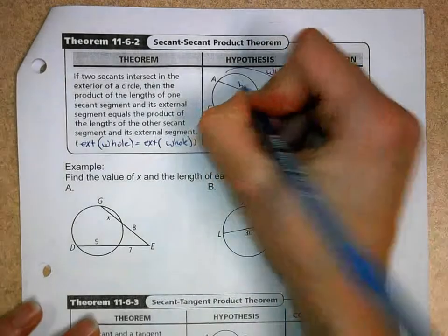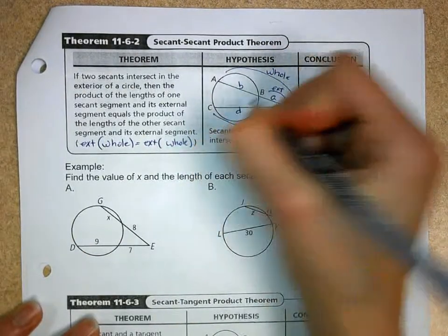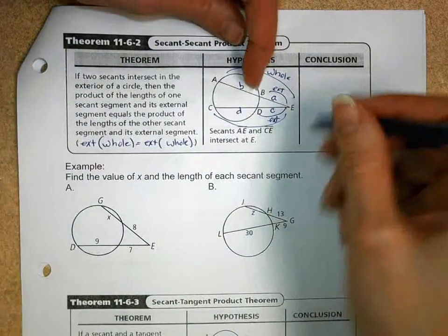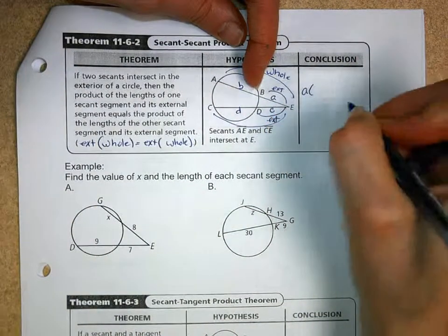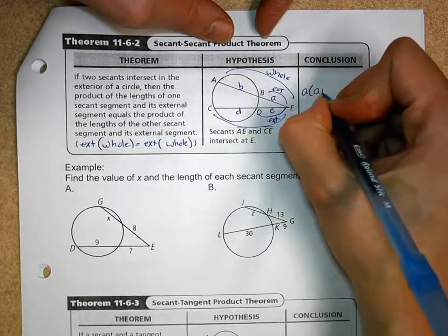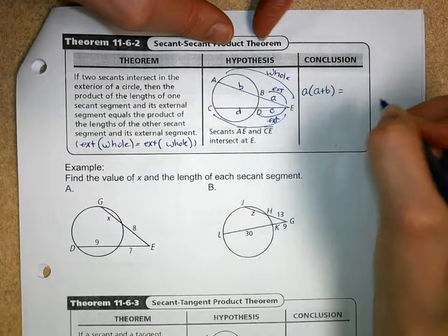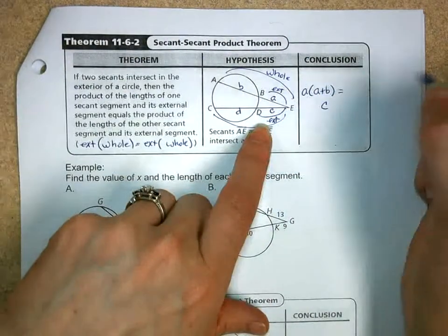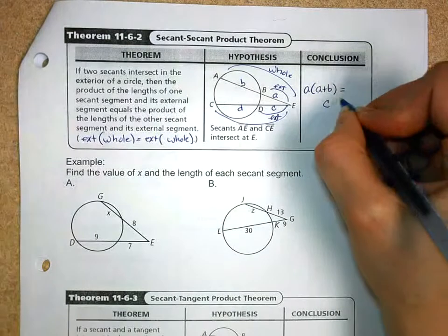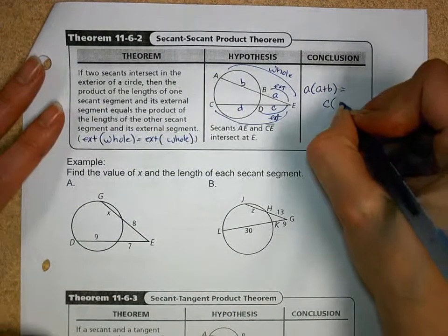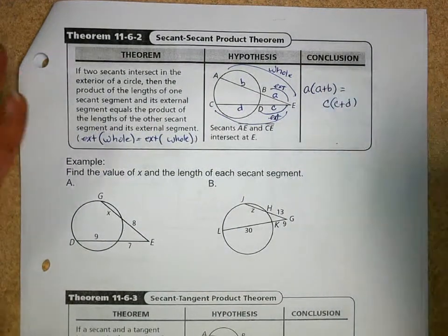So let's label this up again. Let's call this one A and B. This would be C and D. So what I mean by that is the exterior portion is A times the length of the whole thing, well that's A plus B, equals the exterior which is C times the length of the whole thing, C plus D.